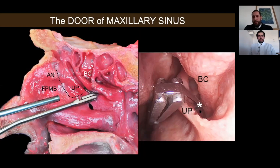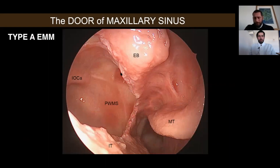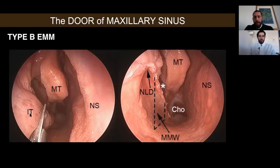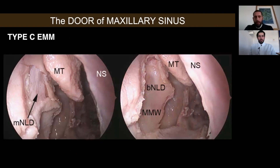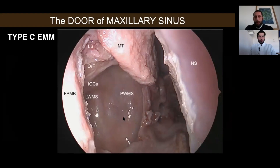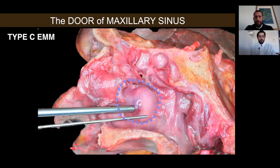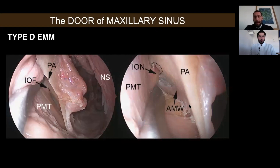Starting from the standard opening of the maxillary sinus with an inferior antrostomy, we can enlarge our middle antrostomy to the palatine bone posteriorly, the inferior turbinate inferiorly, the ethmoid bulla and roof of the maxillary sinus superiorly, and the nasolacrimal duct anteriorly. This is the smaller aperture in oncologic surgery for coronal approaches — the Type A endoscopic maxillectomy. For Type B, we sacrifice the inferior turbinate and remove the medial wall of the maxillary sinus, leaving the nasolacrimal duct intact. For Type C, we also cut the nasolacrimal duct, significantly improving visualization of the maxillary sinus.